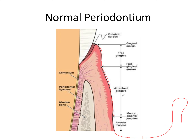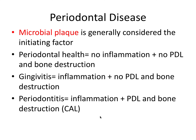Now let's talk about periodontal disease, when there's some problem with the periodontal apparatus. Microbial plaque is generally considered the initiating factor — this is super important. Microbial plaque, also known as biofilm, is the accumulation of bacteria in a film layer on the tooth surface, and this is generally considered the initiating factor in periodontal disease.